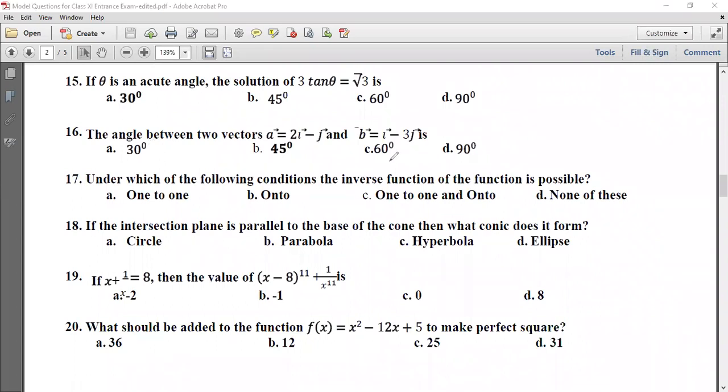Problem 16: The angle between the two vectors a vector 2i minus j and b vector i minus 3j is. So now, cos theta equals a vector dot b vector divided by magnitude of a vector into magnitude of b vector. So a dot b, i by i and j by j, so 2 into 1, minus 1 into minus 3.